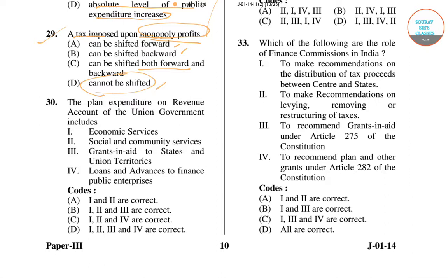If a tax is imposed upon monopoly profit, the monopolist cannot choose a better position of supply and price so as to increase his profit out of which to pay the tax. He is supposed to have already chosen the maximum profit position even if no tax on monopoly profit is imposed. This conclusion remains valid whether the tax on monopoly profit is lump sum or proportionate. Imposition of such a tax does not shift the demand or supply curve, so the sale price of the commodity does not change. For question number 29, the right answer is option D.